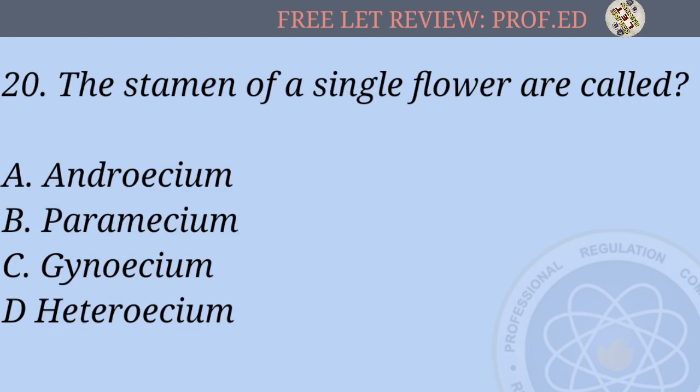Question 20: The stamens of a single flower are collectively called: A) Androecium, B) Paramecium, C) Gynoecium, D) Heteroecium.